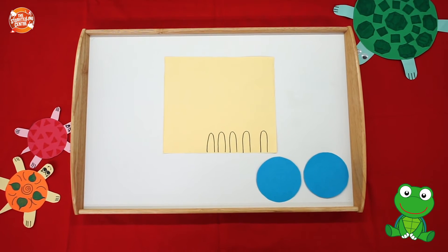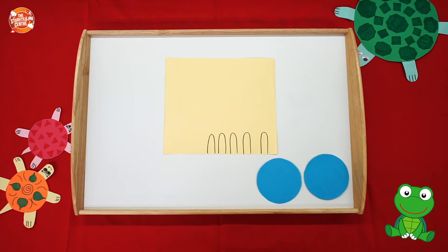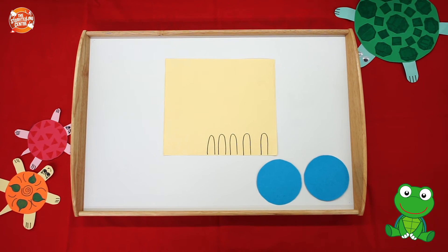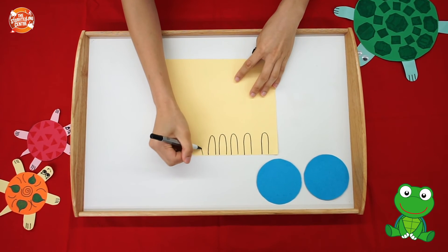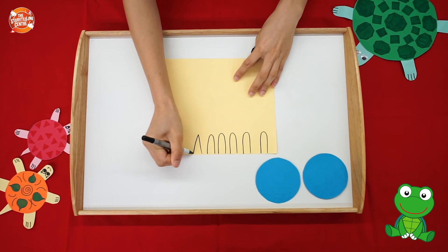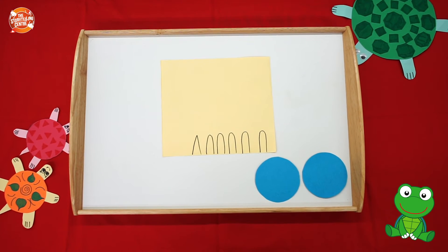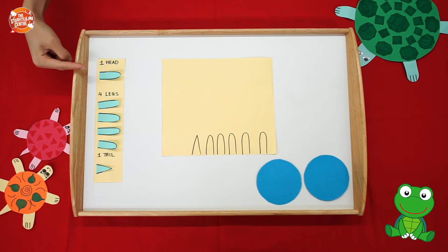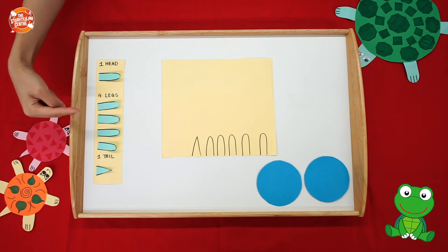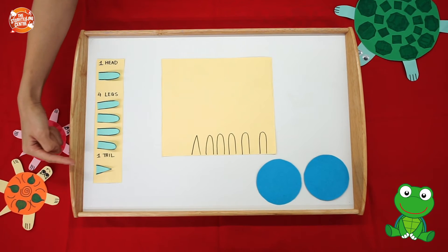Good job boys and girls. Now let's do that one more time for the tail. But instead of a U, draw a long V. Like this. Good job boys and girls. Now remember, you will need one head, four legs, and one tail.